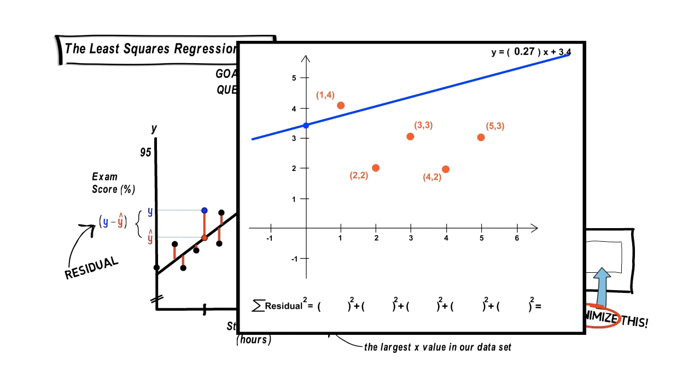Our goal is to draw a line that most closely mimics the behavior of the dots. Notice that the line I have, I'm starting with, is y equals 0.27x plus 3.4.